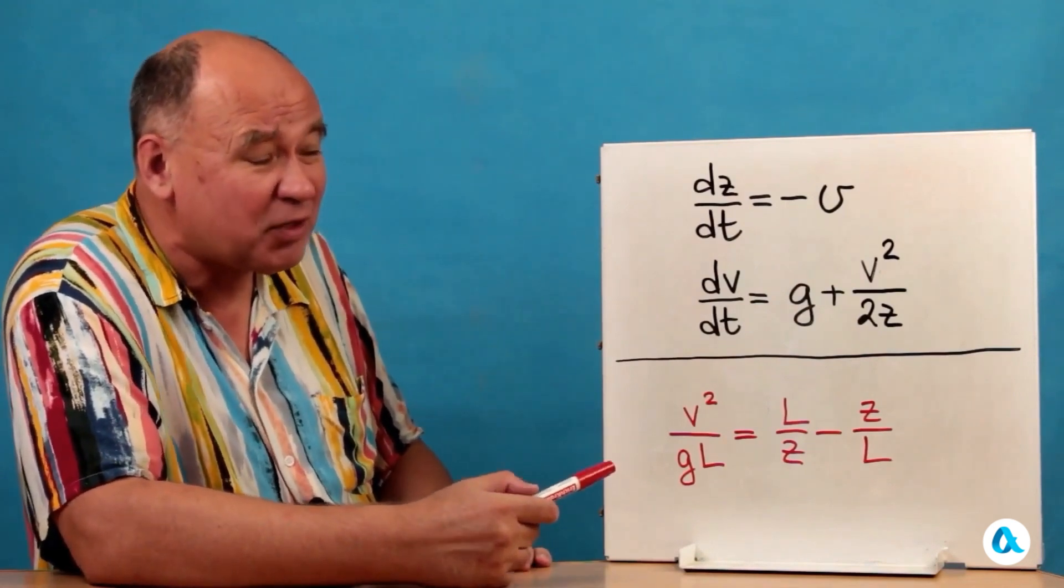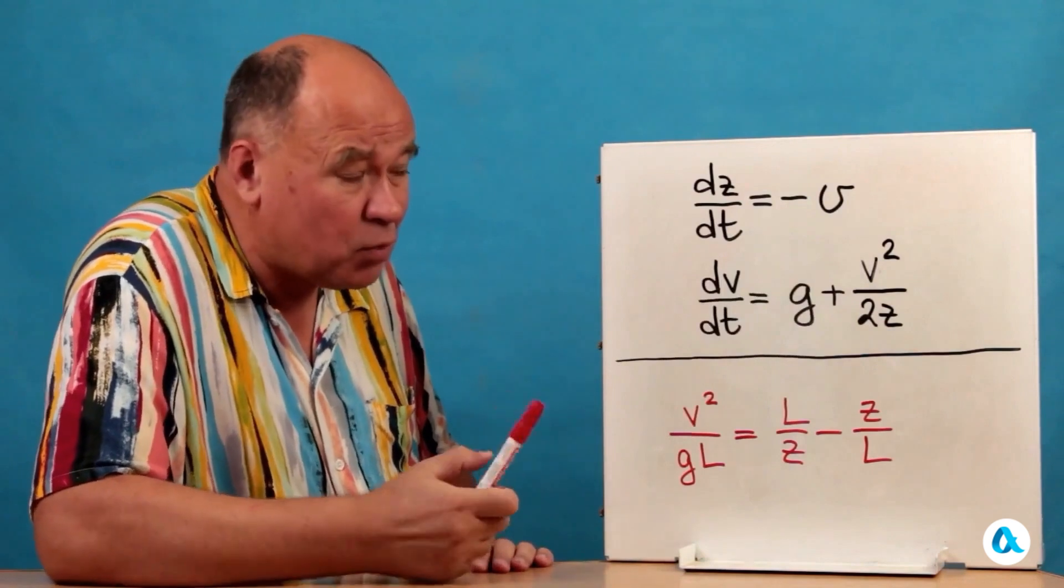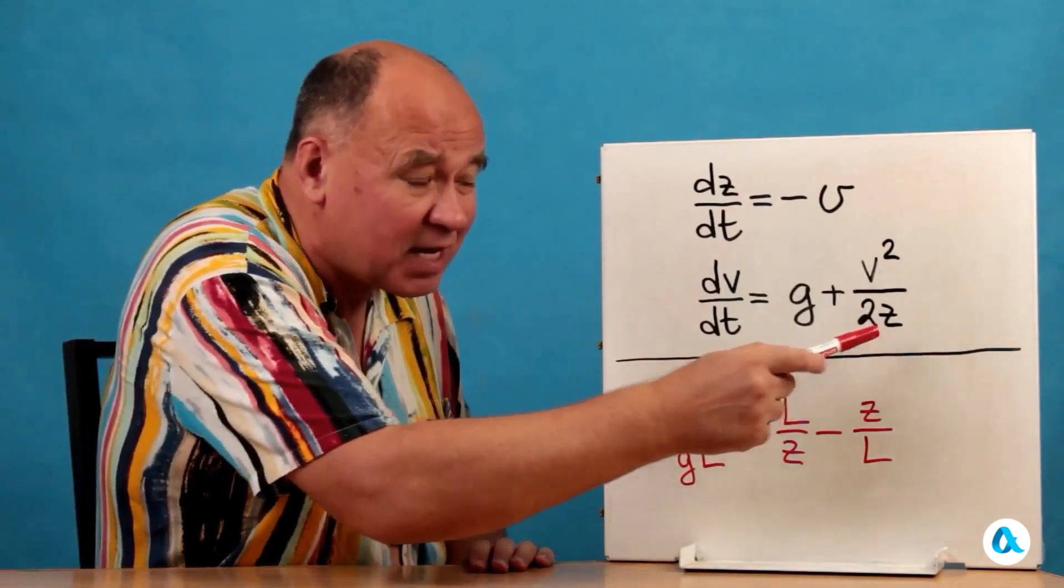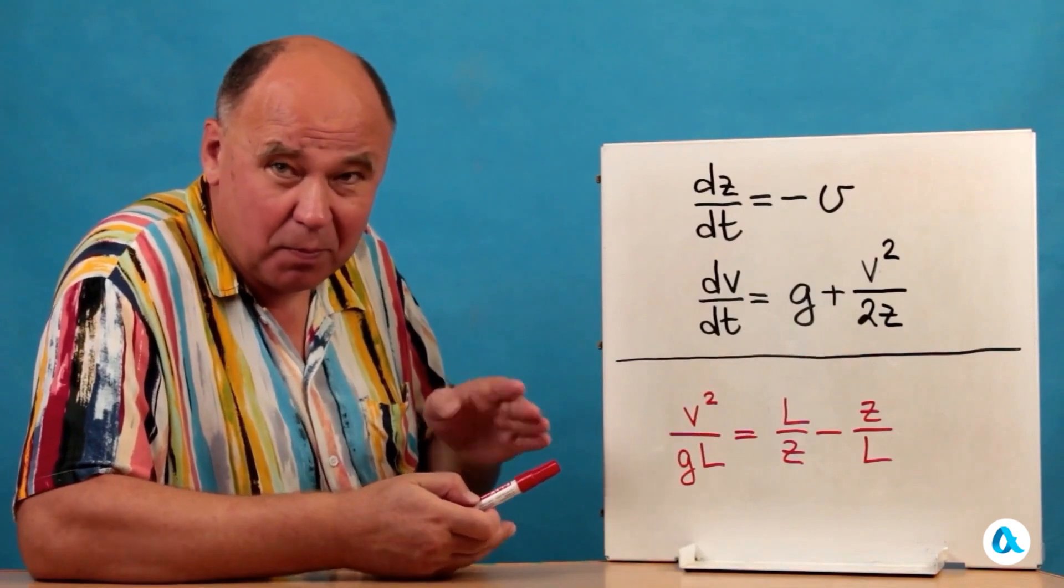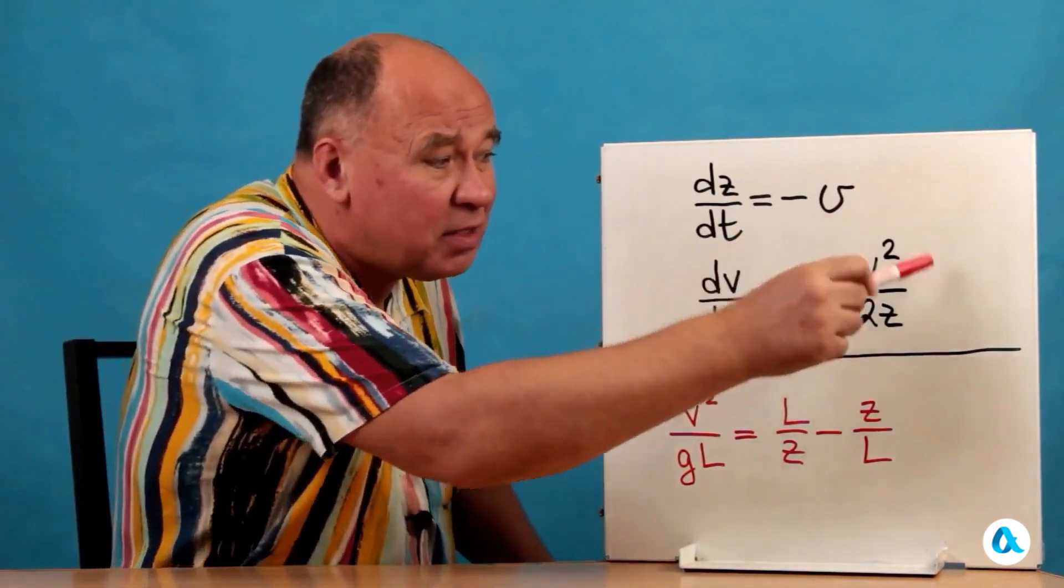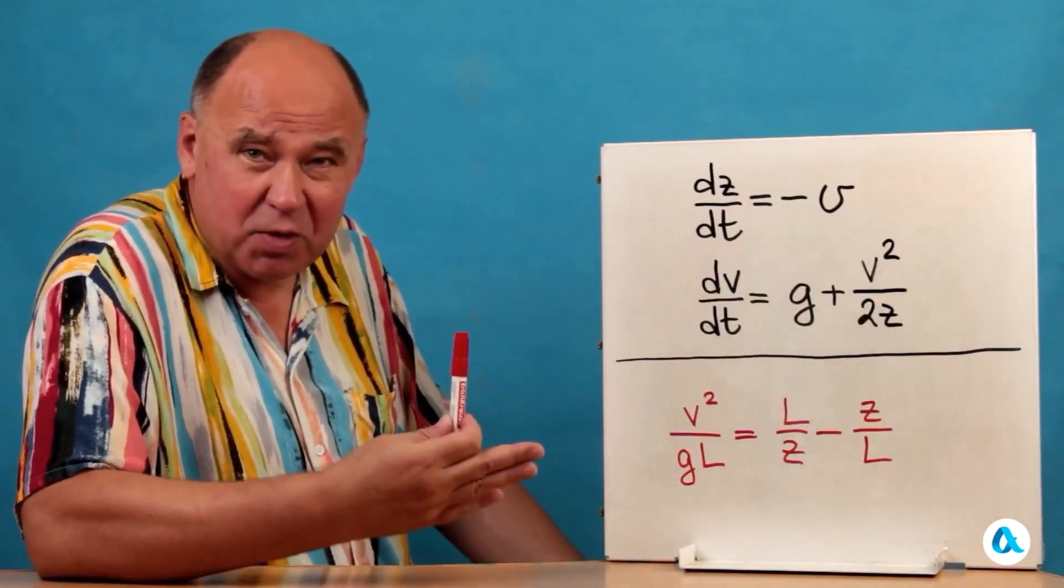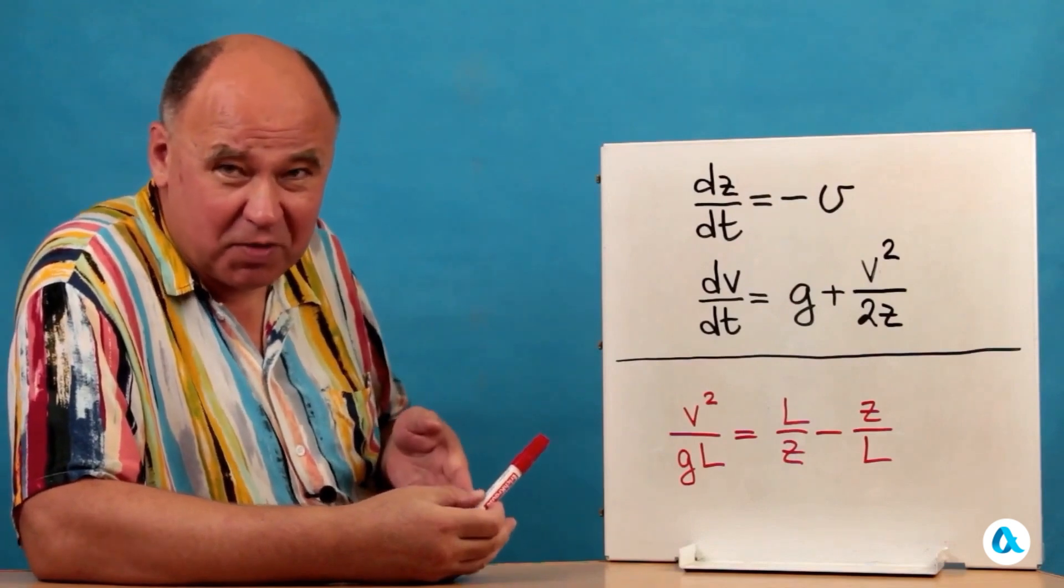Well, let's look at this term, at this acceleration. Let's take a look. Well, first of all, in the denominator, we have Z. So, how much of the chain is left to fall? And the smaller this Z is, the larger this term becomes. The acceleration during the straightening of the chain approaches infinity.